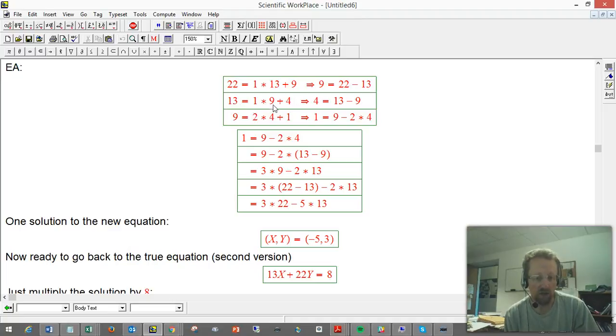Thirteen, one, nine goes into that once with a remainder of four. We can solve for the remainder, thirteen minus nine. Nine, well four goes into that two times the remainder of one, and so one is nine minus two times four.